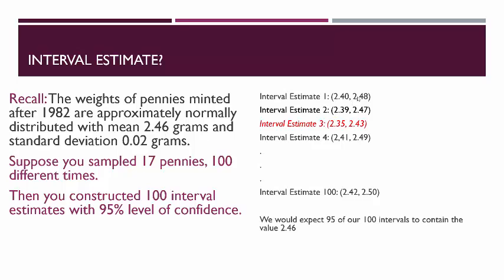The next time you say you're 95% confident the mean weight is somewhere between 2.39 and 2.47 grams — that one got it right as well because 2.46 is in that interval. The third time you collect 17 pennies and say you are 95% confident the mean weight is somewhere between 2.35 and 2.43 grams. Notice the real mean, 2.46, is outside this interval — so this interval got it wrong. If we're 95% confident, we would expect that if we did this 100 times, 95 of our 100 intervals would contain 2.46 grams.